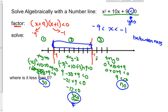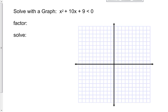Now let's try using this exact same question. Let's try this exact same question, but we're going to solve it on a graph. It starts out the same way with factoring. (x + 9)(x + 1). Where is this less than 0? We again get our two solutions, -9 and -1.